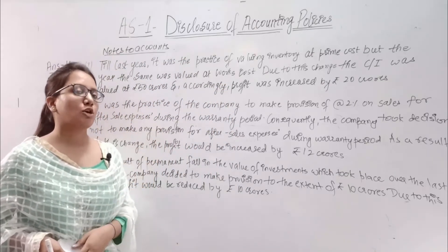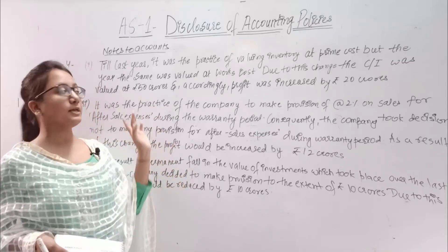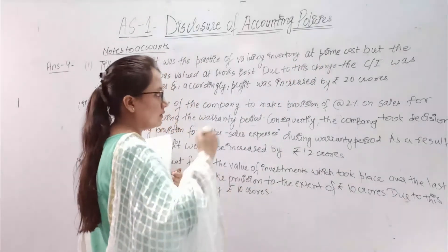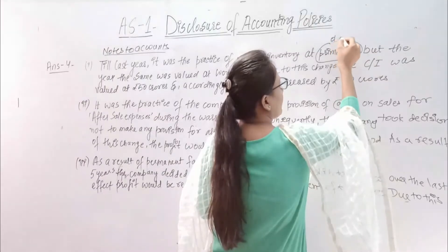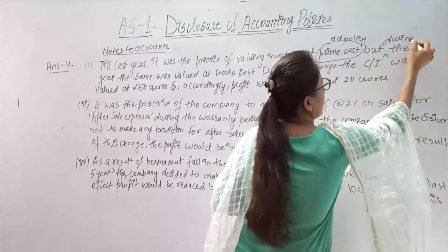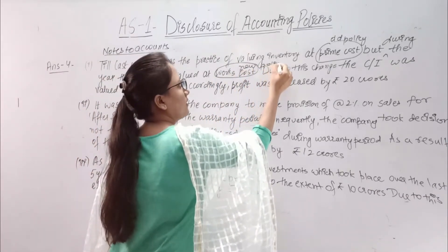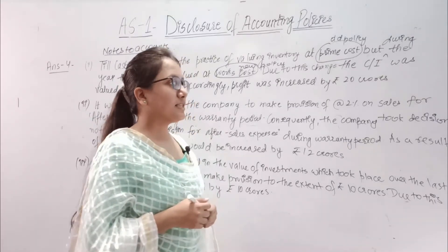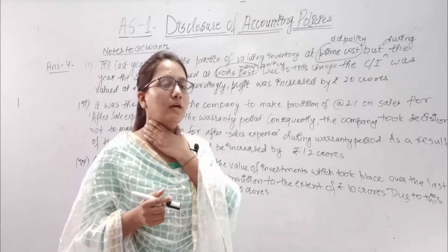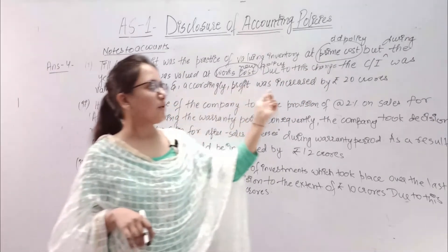The value of closing stock increases from 20 crore, so our profit will also increase. Due to this change, the closing stock was valued at 50 crore, and accordingly the profit was increased by 20 crore. Now for the second point, what did the company do? They made a 2% provision for after-sale service because the company knew that after sale they should give free service during the warranty period. But in the current year, the company improved their techniques, which is why the company has the assurance that the 2% provision is not needed and no free service will need to be given during the warranty period. So the company finished their provision. Whether to make provision or not — that is a change in accounting policy.